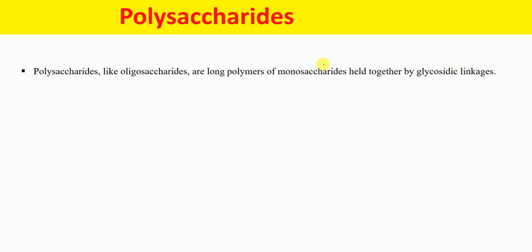Now let's talk about polysaccharides. Like oligosaccharides, polysaccharides are long polymers of monosaccharides held together by glycosidic linkage. In polysaccharides, we have more than ten saccharide units — from eleven and above. So polysaccharides are long polymers of monosaccharide units which contain at least eleven saccharide units or more.